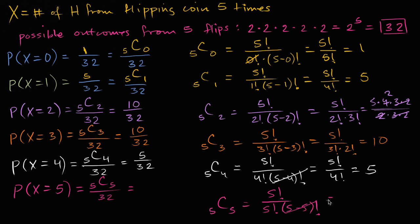You can see the symmetry: 1/32, 5/32, 10/32, 10/32, 5/32, 1/32. That makes sense because the probability of getting five heads equals the probability of getting zero tails, which should equal the probability of getting zero heads. In the next video, we'll graphically represent this and see the full probability distribution for this random variable.